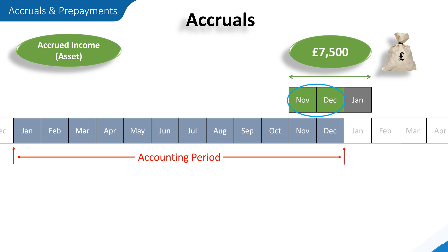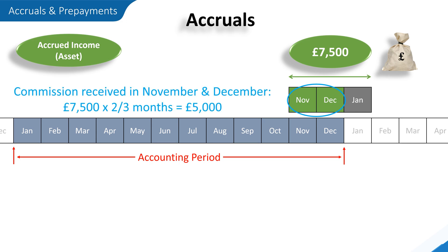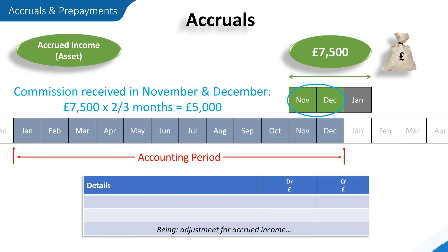So the commission earned in November and December will be £7,500 divided by three months, multiplied by two — or two-thirds of £7,500 — which is £5,000. Looking at the journal adjustment required to enter this accrued income into the general ledger, £5,000 will be credited to a commission income account, which would be closed off and the balance transferred to the statement of profit or loss for our accounting period. And £5,000 will be debited to the accruals account. Once all the adjustments for accruals have been made, the balance will be transferred to the statement of financial position for our accounting period.